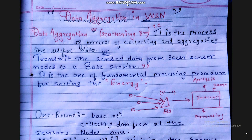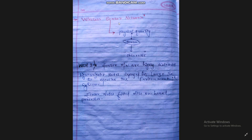Hello everyone, I am Kuldeep Malbya and today we are going to learn about data aggregation in WSN. First of all, let us understand the term WSN. WSN stands for wireless sensor network. A sensor network is a device which measures the physical quantity and converts it into an observable which is easily observed by any instrument. These sensor nodes are highly distributed, lightweight nodes deployed in large numbers to monitor the environment of the system.